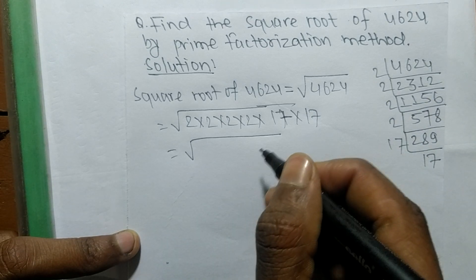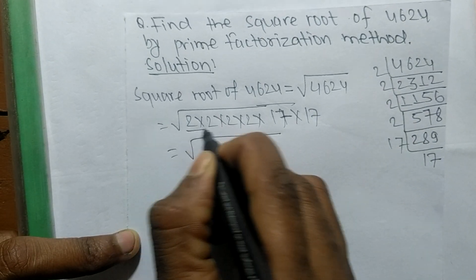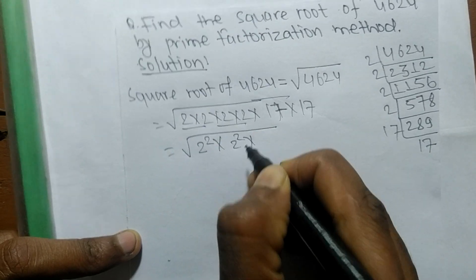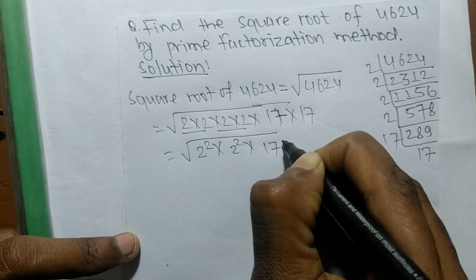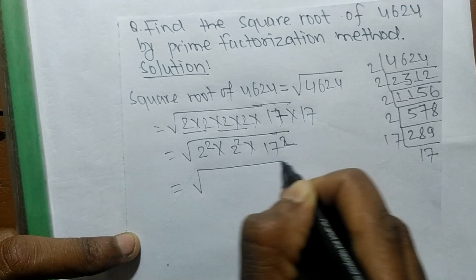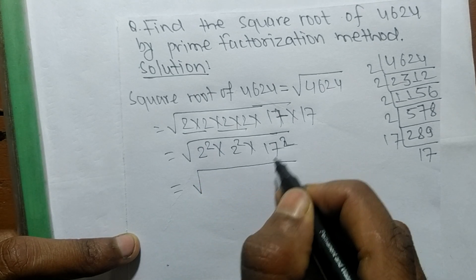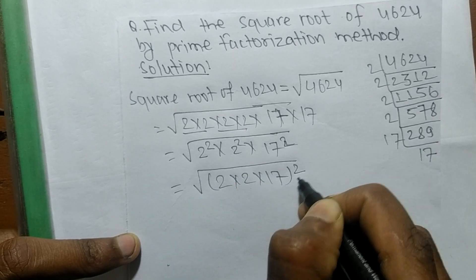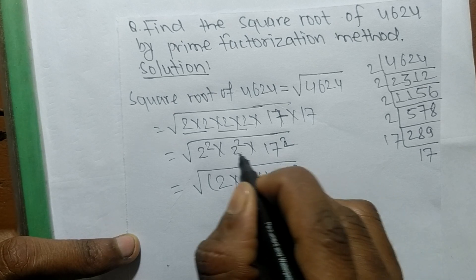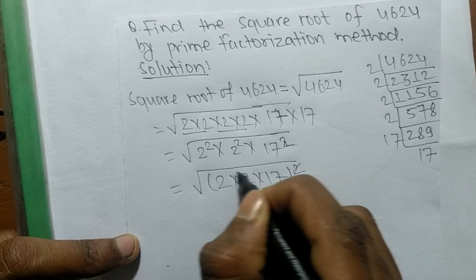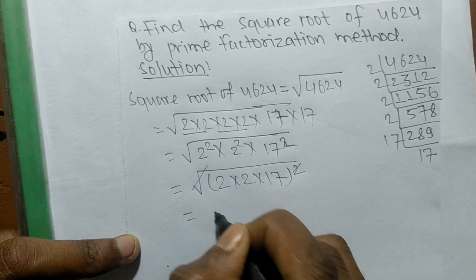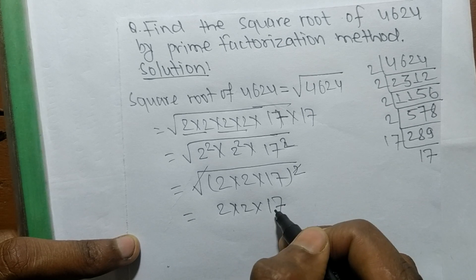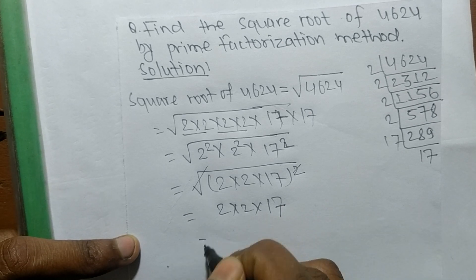Now we write the prime factors as squares: 2 into 2 is 2 squared, another 2 into 2 is 2 squared, and 17 into 17 is 17 squared. Since square is present in all these numbers, we take 2 into 2 into 17 as a whole square. The square root and the square cancel each other out, so 2 into 2 into 17 comes out.